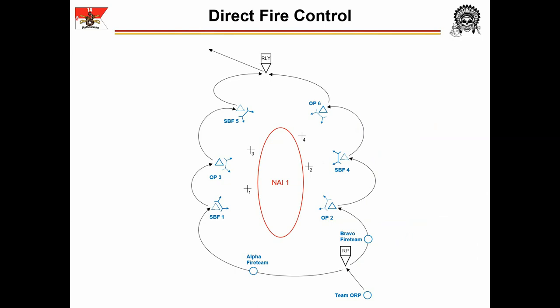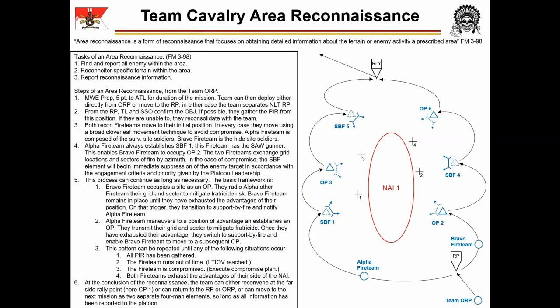Once Alpha Team confirms their sectors are adjusted to protect Bravo Team, Bravo Team begins to reconnoiter the NAI from their already-occupied position, continuing to observe and report PIR. When the Bravo Fireteam leader decides that the advantage of that position has been exhausted, he radios Alpha Fireteam and instructs them to displace to a subsequent OP. As Alpha Fireteam cloverleafs to the next position, Bravo Fireteam assumes the support-by-fire role, switching from the solid OP position at OP2 to the dotted support-by-fire position. Once Alpha occupies OP3, they send their grid to Bravo, who plots it and adjusts sectors to provide at least 15 degrees of offset.